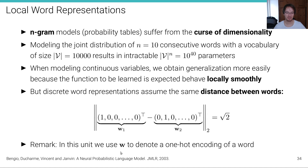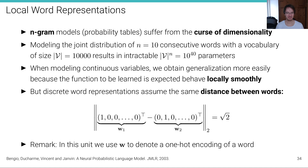Let W denote a one-hot encoding of a word — we'll use this encoding throughout the entire unit. Assume two different words as vectors of dimension 30,000, where one element is one and the others are zero. If we subtract these two vectors and compute the L2 norm, we get a distance of square root of two, no matter which combination of any two words we consider (unless it's the same word, where the distance is zero). This means all words have the same distance to each other.